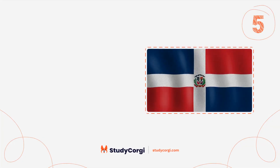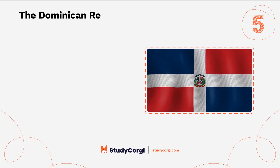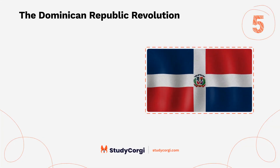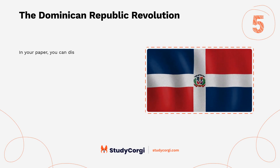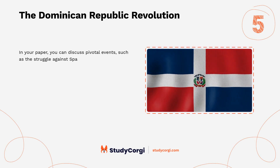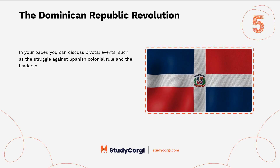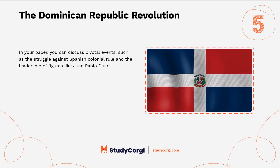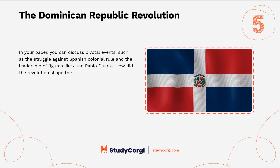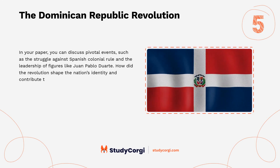The Dominican Republic Revolution. In your paper, you can discuss pivotal events such as the struggle against Spanish colonial rule and the leadership of figures like Juan Pablo Duarte. Consider how the revolution shaped the nation's identity and contributed to its future development.